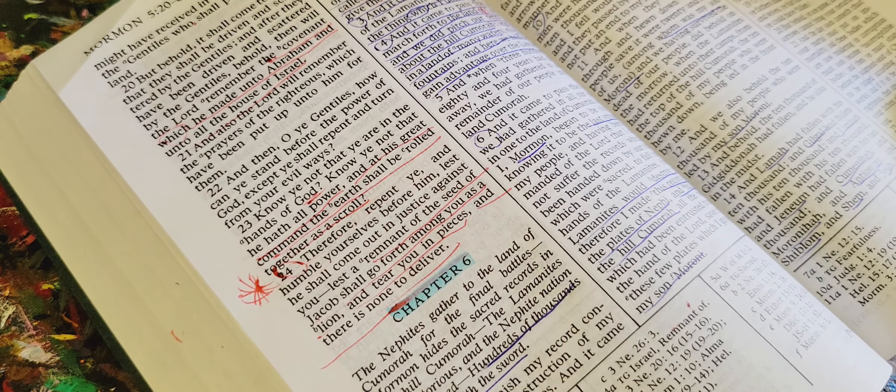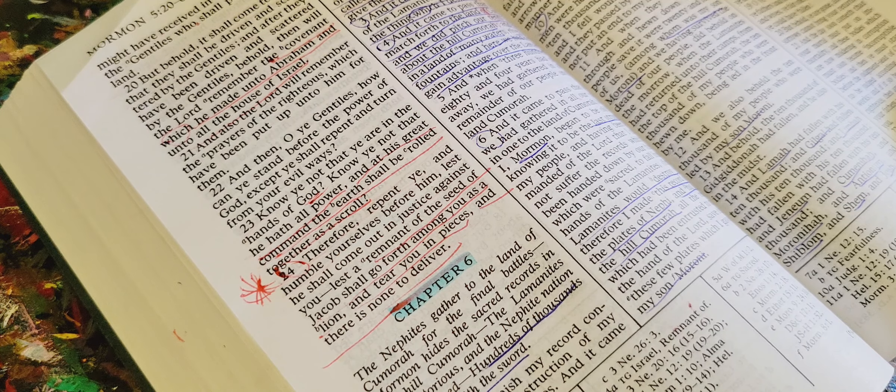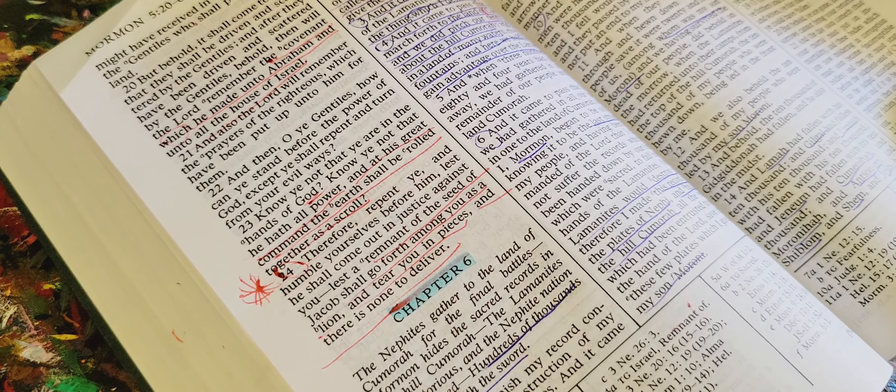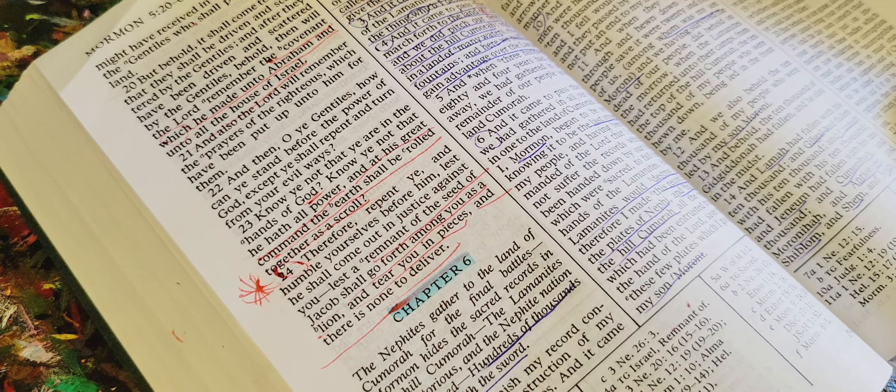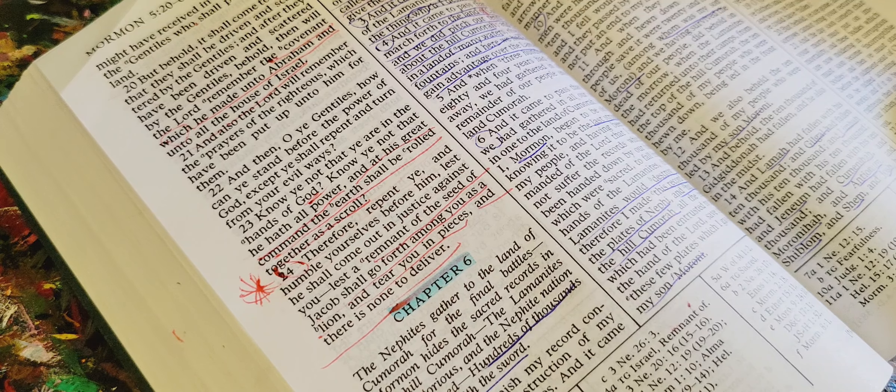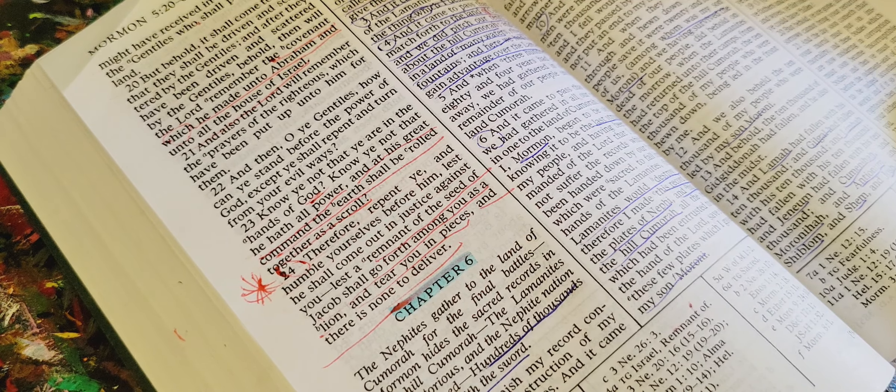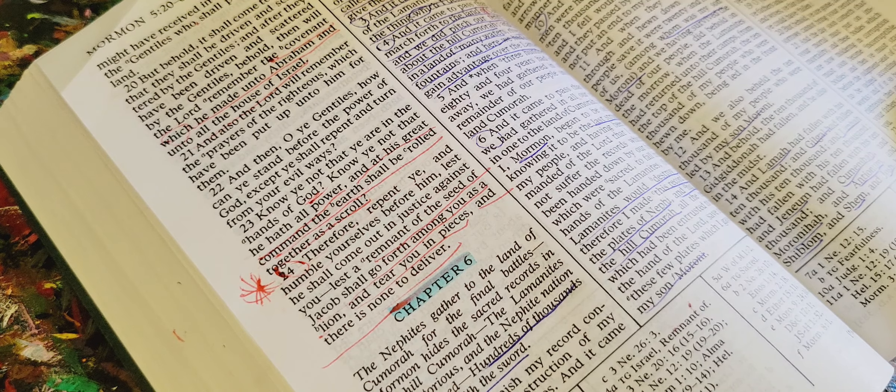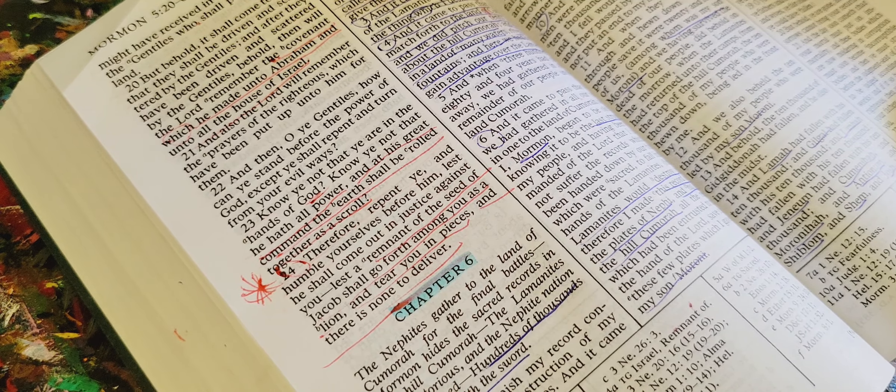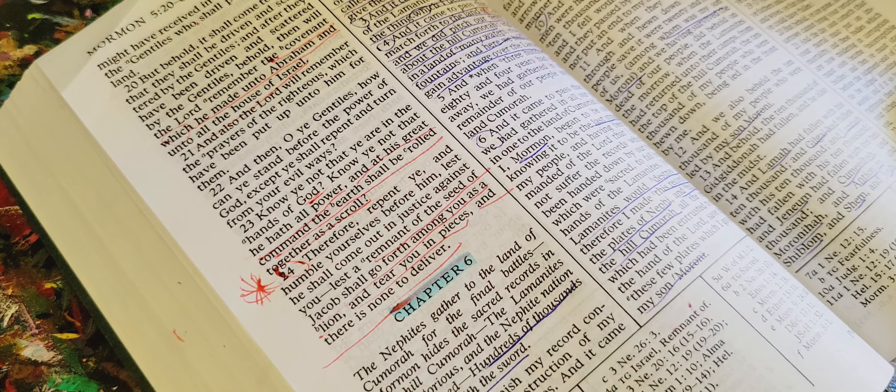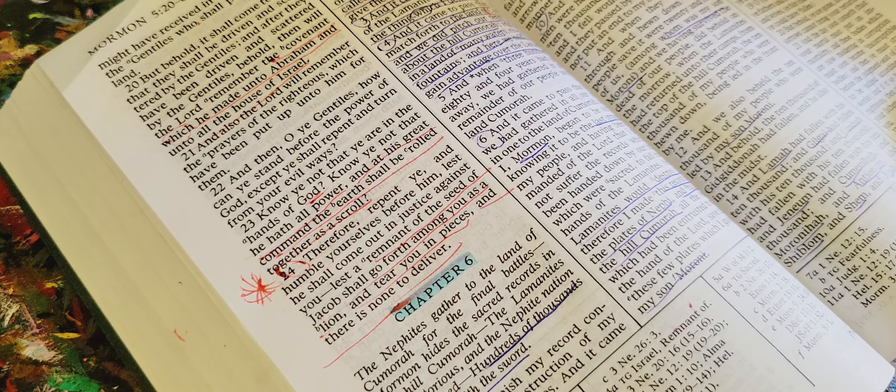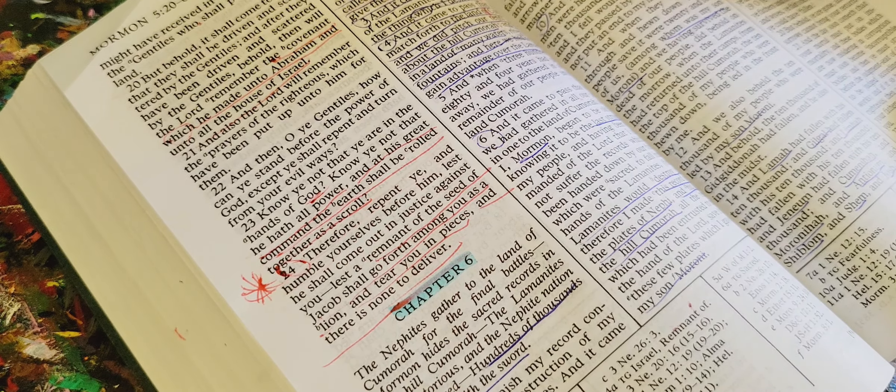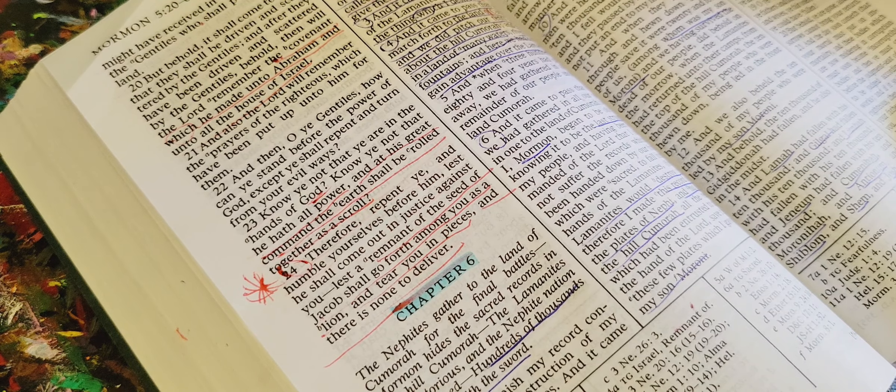And my soul was rent with anguish because of the slain of my people, and I cried, O ye fair ones, how could ye have departed from the ways of the Lord? O ye fair ones, how could ye have rejected that Jesus who stood with open arms to receive you? Behold, if ye had not done this, ye would not have fallen, but behold, ye are fallen, and I mourn your loss. O ye fair sons and daughters, ye fathers and mothers, ye husbands and wives, ye fair ones, how is it that ye could have fallen? But behold, ye are gone, and my sorrows cannot bring your return.